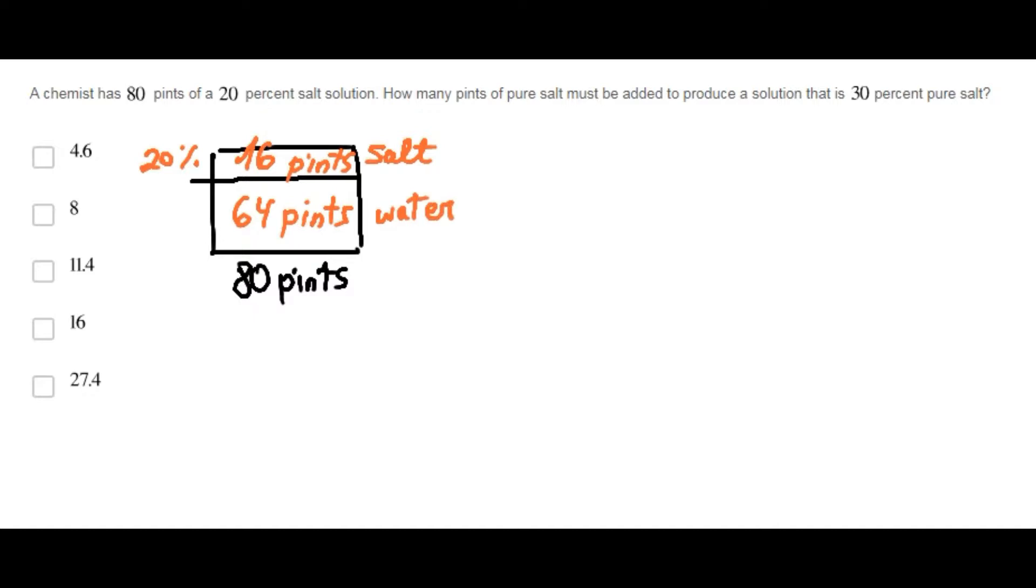Now, let's read the question again. How many pints of pure salt must be added to produce a solution that is 30% pure salt?